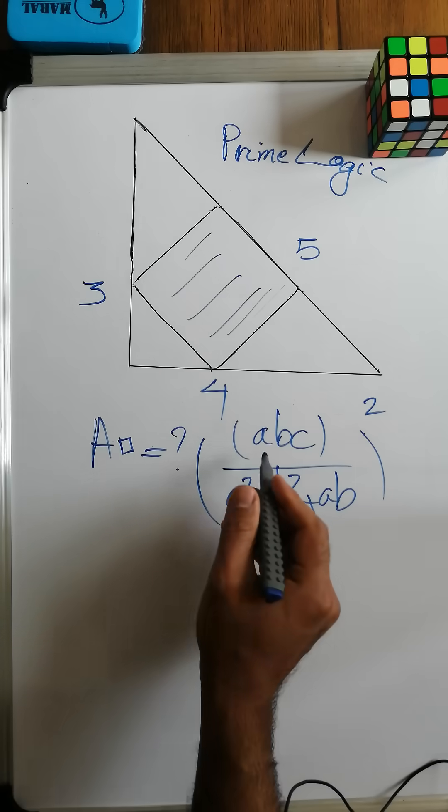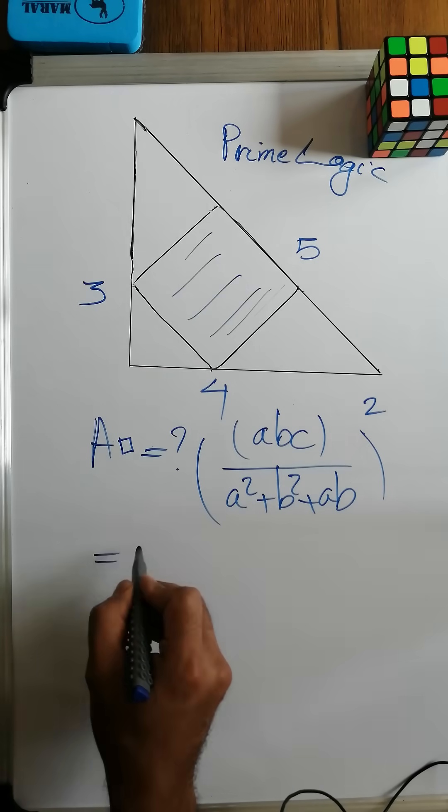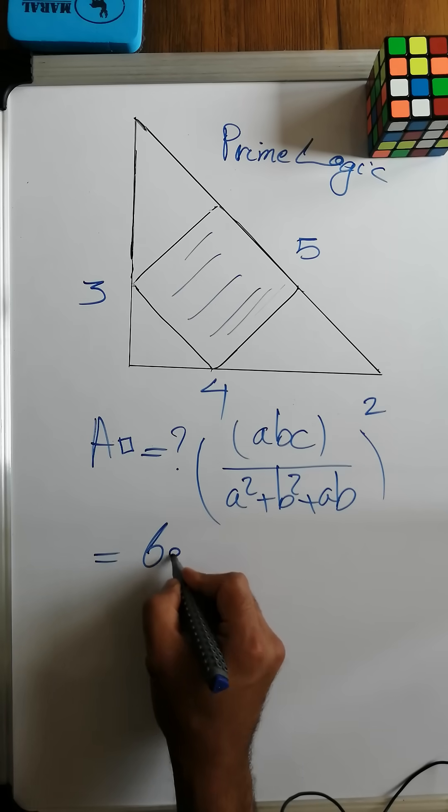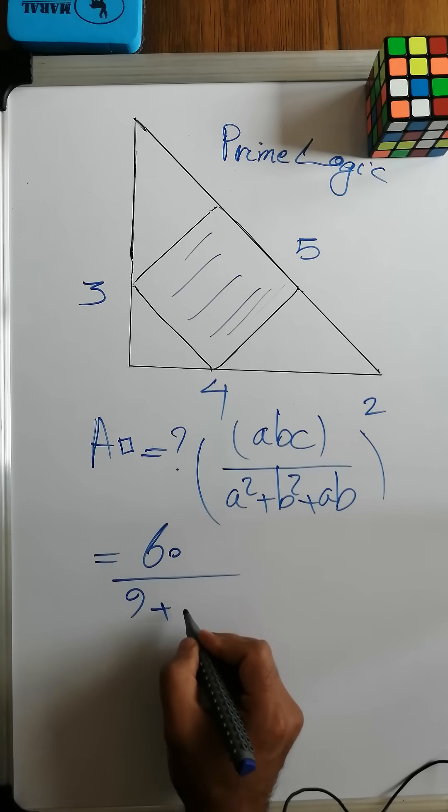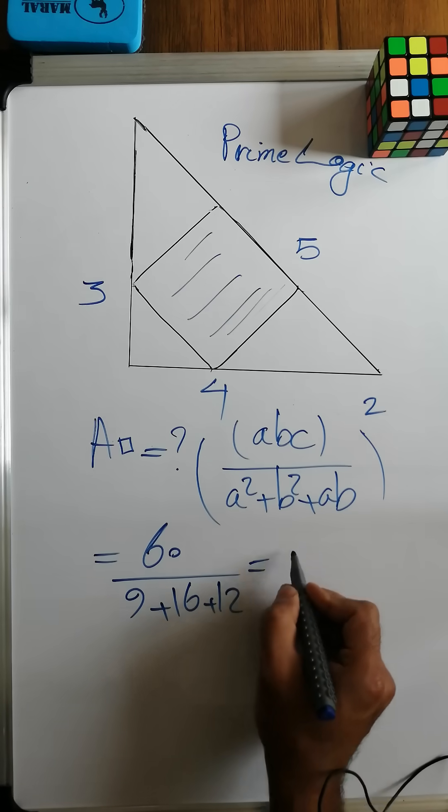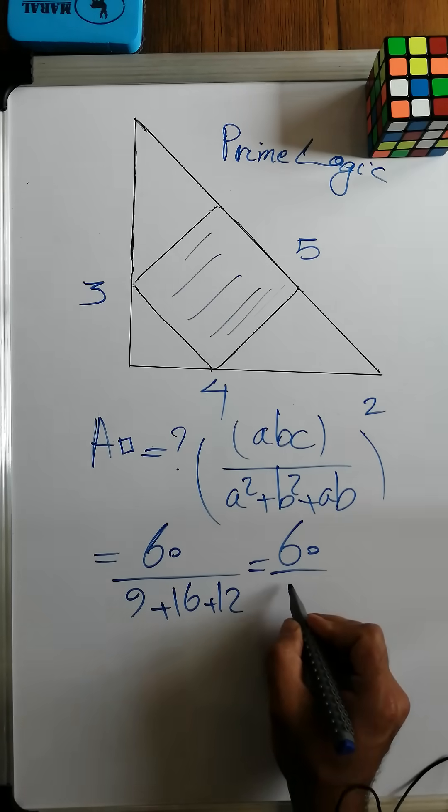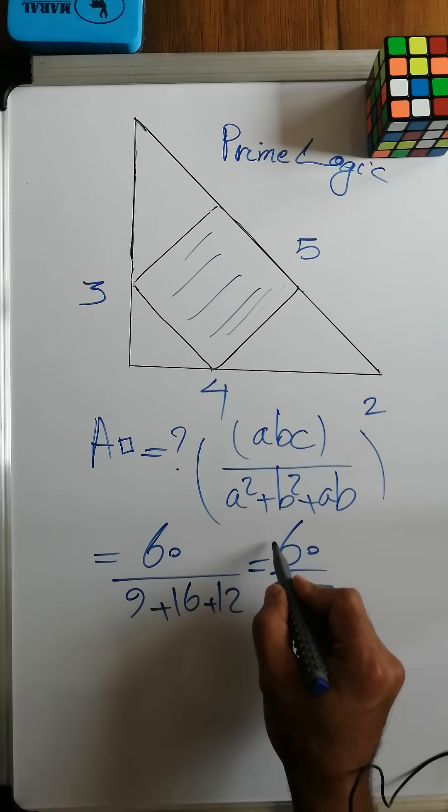Let's substitute: a times b times c, so 3 times 4 is 12, times 5 is 60, over a² which is 9, plus b² which is 16, plus ab which is 12. This is going to be 60 over 37, and this is the side length of the square.